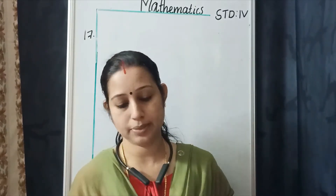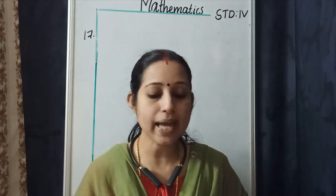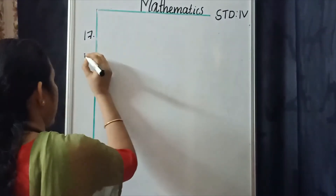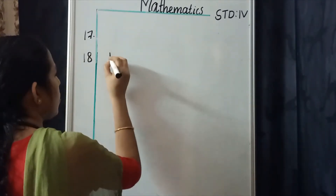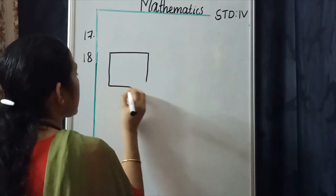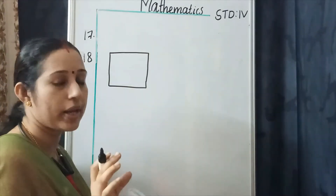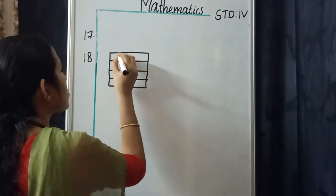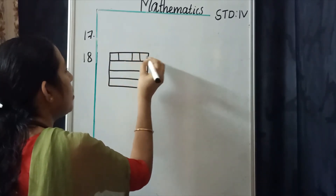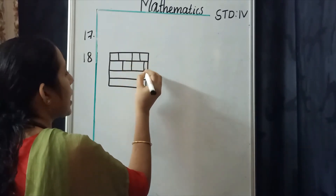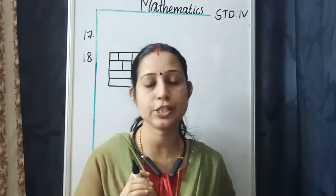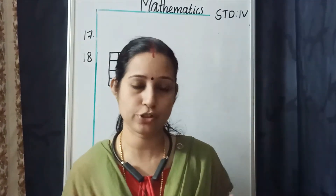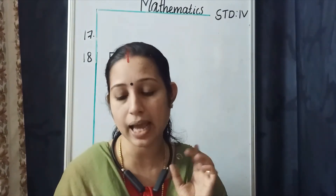Question number 18: 'Create a tiling pattern using a square and a rectangle.' The basic shapes are square and a rectangle. You can draw one square then one rectangle, alternating them to form the tessellation. This is just an example — you can use your imagination, but the basic shapes must be rectangle and square.